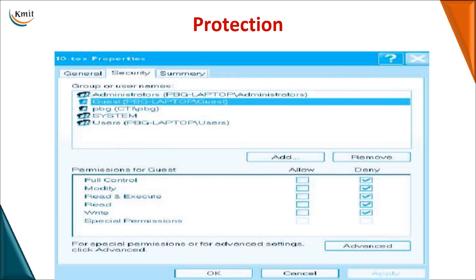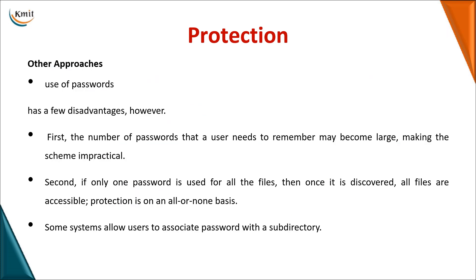In the Windows operating system, permissions are managed through a GUI rather than commands. For example, for a guest user you can click on the guest account and deny all permissions, so the guest cannot perform any operations. This is how data is protected in both Unix and Windows operating systems.